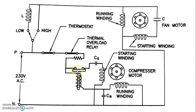For this we use one relay, which normally remains in the de-energized form. In due course of time it energizes and the contacts open, and the starting winding and starting capacitor are both disconnected from the circuit. We also have a thermal overload relay to protect the compressor motor. In case of overload current or short circuit, the thermal overload relay trips and it protects the motor.